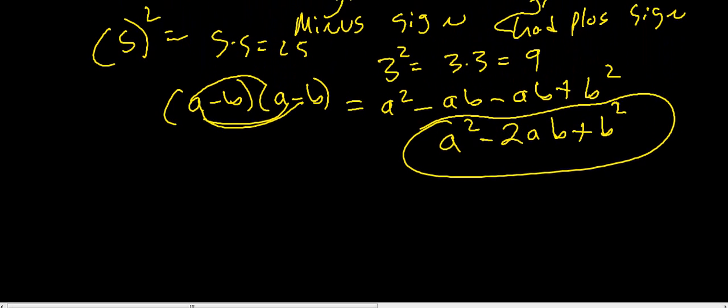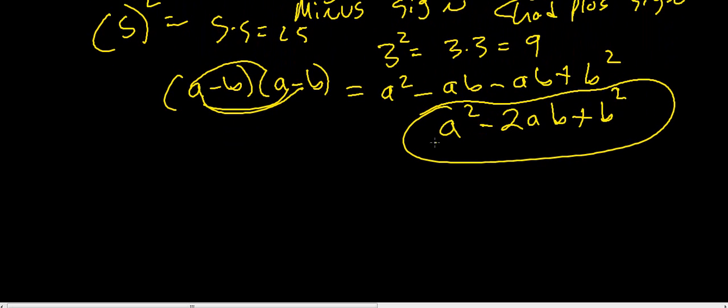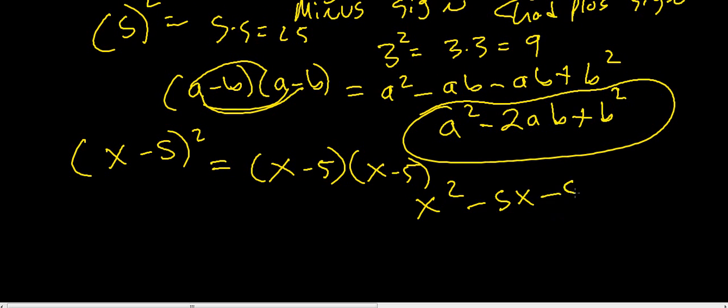So let's look at some more examples here. We are going to use this formula. So let's say if we have (x-5), and we are going to square that, right? Well, you have got (x-5) times (x-5). You can certainly FOIL that out. You get x squared minus 5x minus 5x plus 25. Then by combining your like terms, you got x squared minus 10x plus 25.